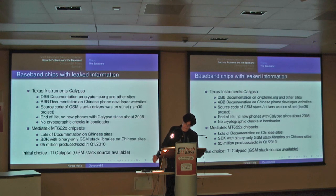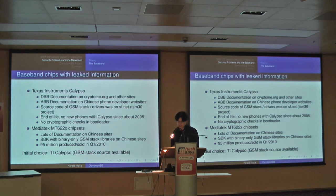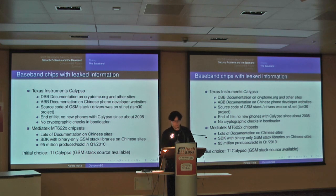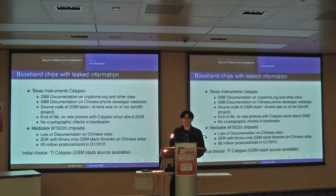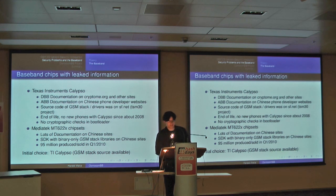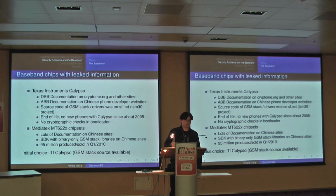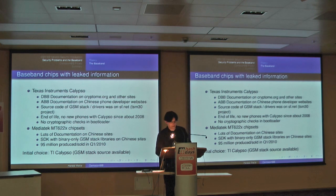We started searching for suitable phones. The most interesting chipset we found was the TI Calypso, because the digital baseband processor register set is documented for whatever reason. The analog baseband documentation can be found on Chinese developer websites. A proprietary GSM stack source code was on SourceForge for four years with 1,600 downloads before TI finally took it down. It also has no cryptography checks in the bootloader, so no DRM cracking is required to download your own code into the baseband processor.